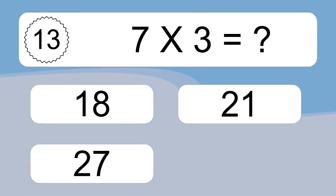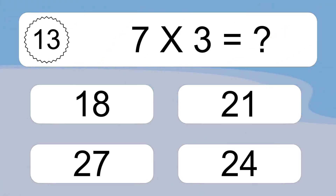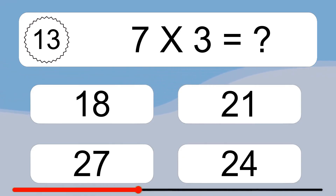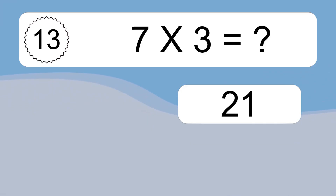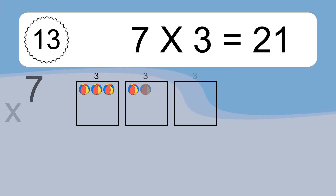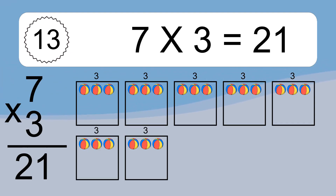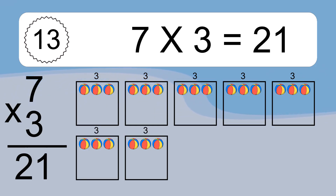7 times 3 equals what? 7 times 3 equals 21. We have 7 boxes, and each box has 3 colorful balls inside. If you count all the balls in all the boxes together, you will have 7 times 3 balls. This equals 21 balls.